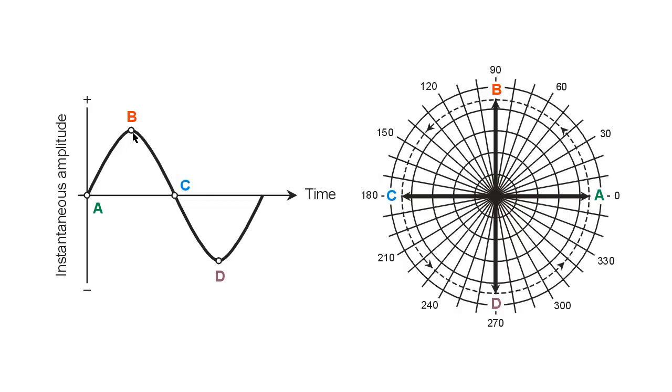After we pass point B and continue along the curve to the half cycle point, we reach point C, 180 degrees of phase. Now the vector points straight off towards the left to the 180 degree marker on the polar coordinate plane. Same length, same angular speed, halfway around, halfway through the cycle.